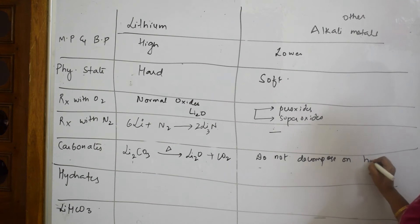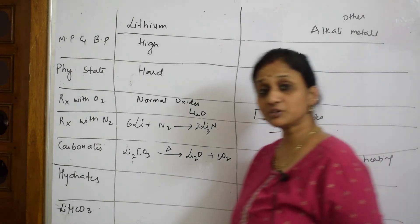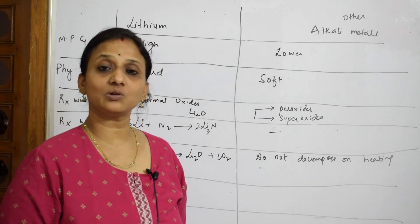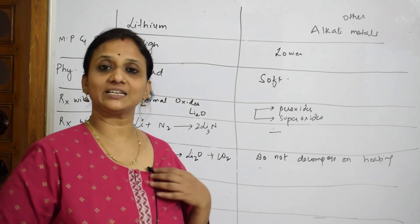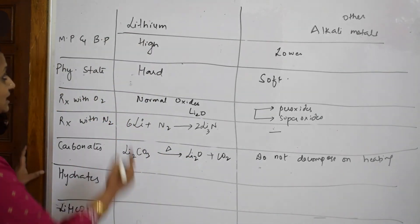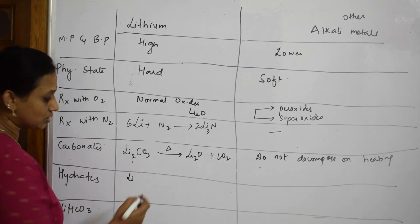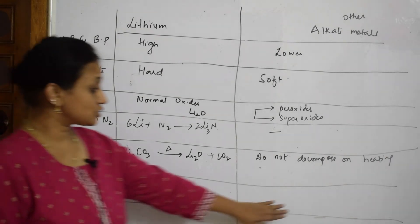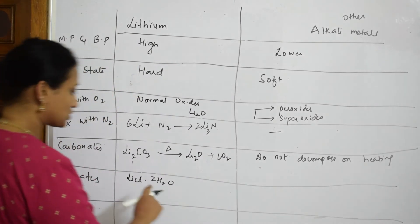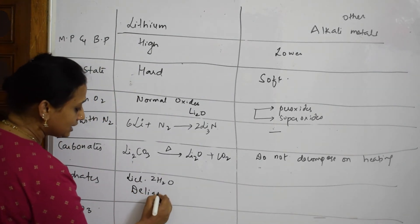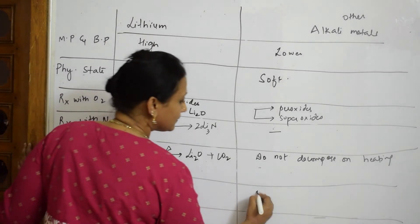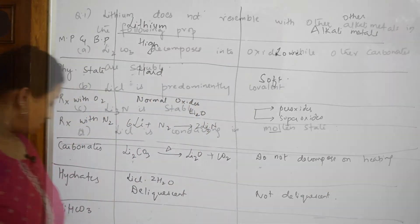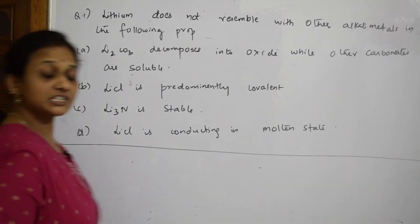For hydrates: because lithium chloride is deliquescent, it absorbs moisture to form the hydrate LiCl·2H₂O. Other alkali metals are not deliquescent in nature, so they do not form hydrates by absorbing moisture — this is a key difference between lithium and other alkali metals.